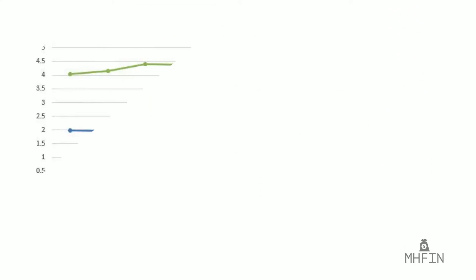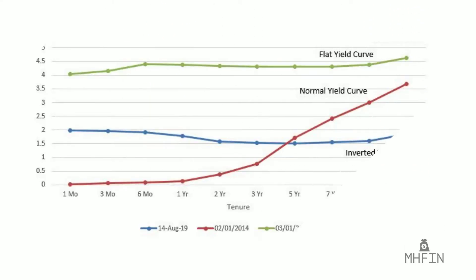The most frequently reported yield curve compares three-month, two-year, five-year, ten-year, and 30-year US Treasury debt. This yield curve is used as a benchmark for other debt in the market, such as mortgage rates or bank lending rates, and it's used to predict changes in economic output and growth.